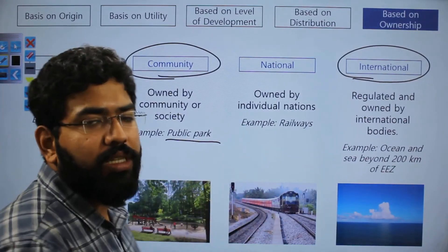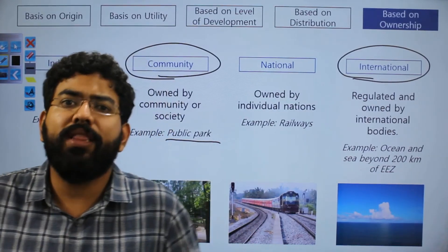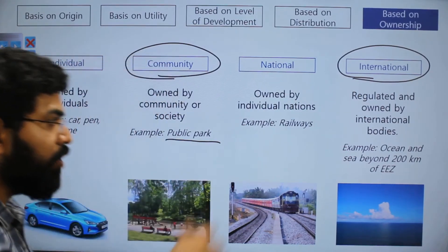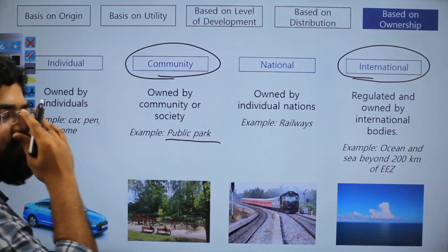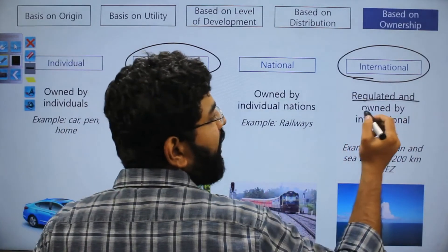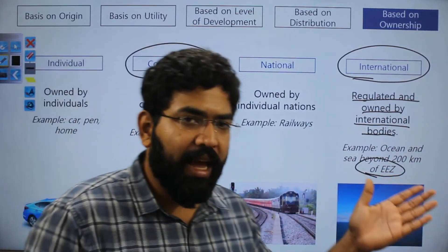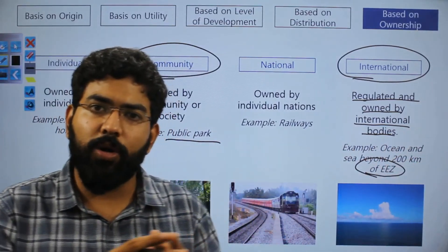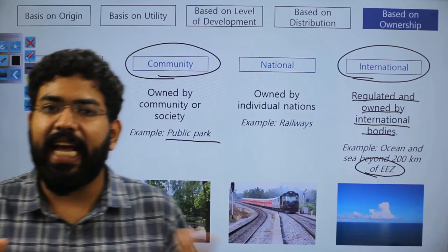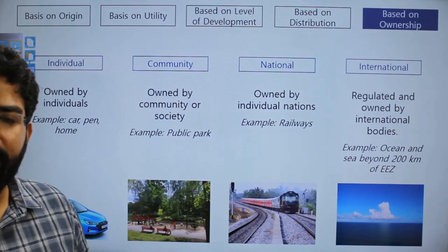International resources are not owned by any specific country — they may be owned by multiple countries or by all countries collectively. An example is the open ocean waters beyond any country's jurisdiction, regulated by international bodies. Antarctica is another example — no country owns it, and any resource found there belongs to everyone. These are international resources.